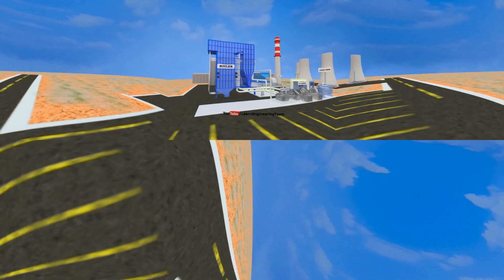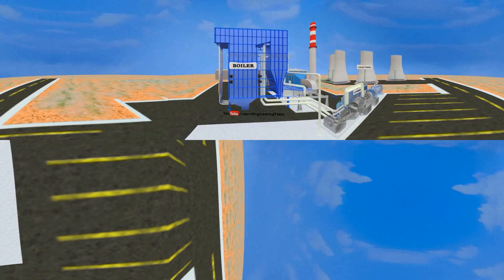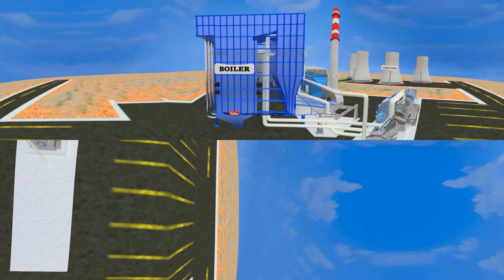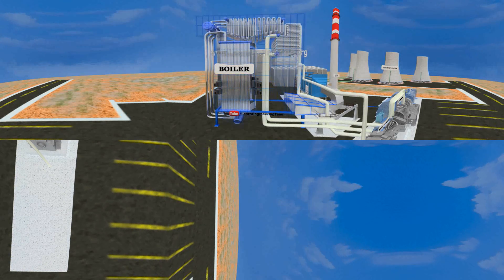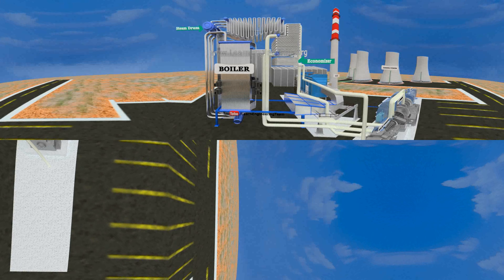First, we will examine how the energy in the pulverized coal is converted to steam. A boiler is used for this purpose. The kind of boiler shown here is known as a water tube boiler. You can see the different parts of the water tube boiler including the economizer, the steam drum, the downcomer, the water wall, the super heater and the reheater.